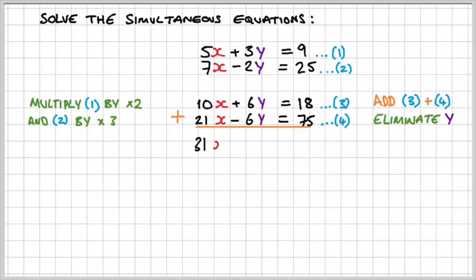So 10x plus 21x gives us 31x. 6y plus a negative 6y cancels out. That's 0. 18 plus 75 gives us 93. Finally, if I divide both sides by 31, I get x is equal to 3.